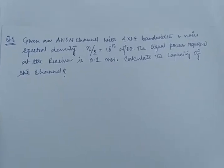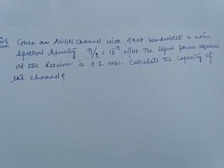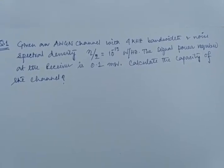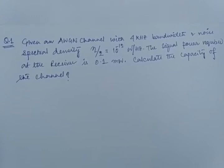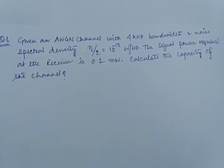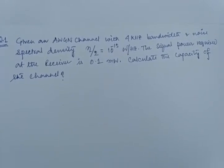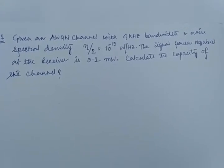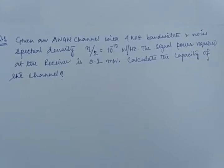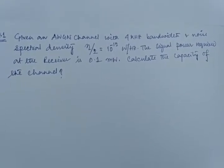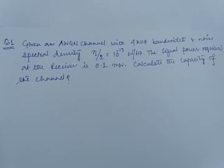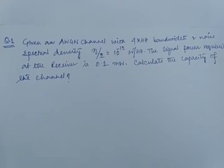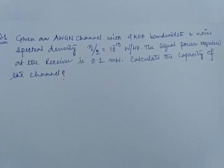Problem number one: Given an additive white Gaussian noise channel with 4 kilohertz bandwidth and noise spectral density eta by 2 equal to 10 to the power minus 12 watt per hertz. The signal power required at the receiver is 0.1 milliwatt. Calculate the capacity of the channel. This question combines analog communication and coding theory.